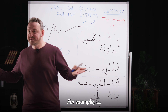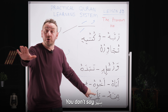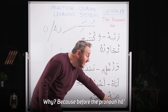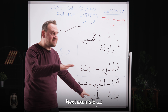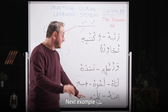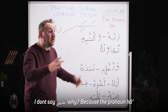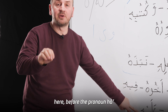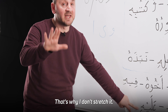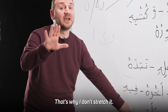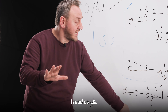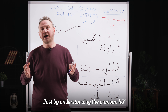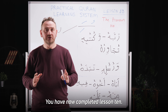Finally, if a cesm comes before the pronoun Ha, you don't stretch it either. For example: min hu — you don't say min huu. Why? Because before the pronoun Ha there is a cesm. Next example: Aleyhi — I don't say aleyhi with a stretch. Why? Because before the pronoun Ha there is a cesm here. That's why I don't stretch it; I read it as: Aleyhi.